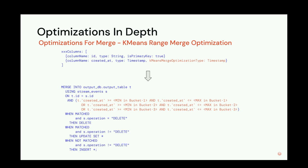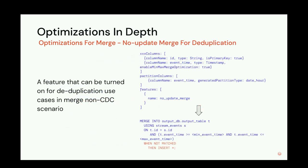The k-means range optimization currently supports four data types: integer, long, timestamp, and MongoDB ID string type. For the MongoDB ID string, the first few bytes of the Mongo ID are actually a timestamp, which is why we can apply this optimization to it.